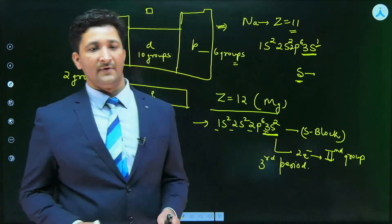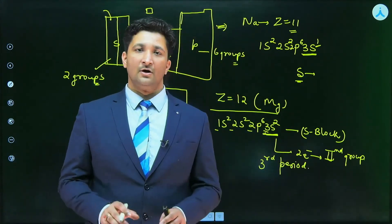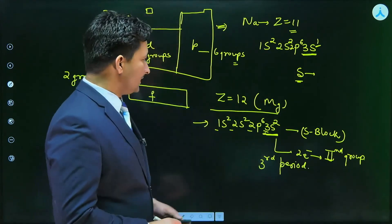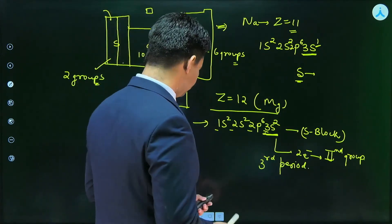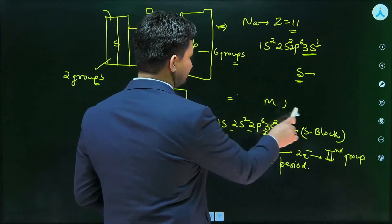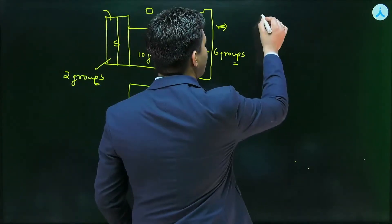This is how we can identify very easily the location of elements for S block element. Now, let us discuss how we can identify for P block elements. If we talk about P block element.